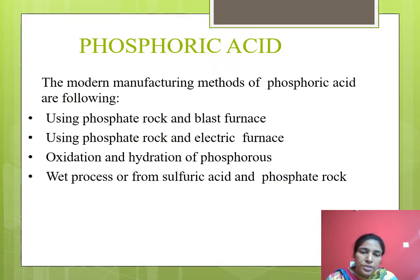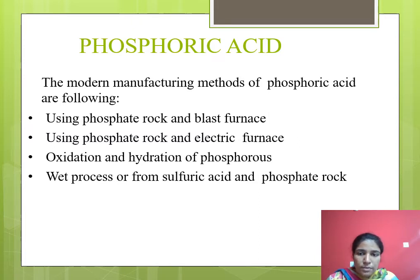Next are the manufacturing methods of phosphoric acid. There are four different manufacturing methods: first, using phosphate rock and blast furnace; second, using phosphate rock and electric furnace; third, oxidation and hydration of phosphorous; and fourth, the wet process using sulfuric acid and phosphate rock. The first two methods are most widely used in industry.